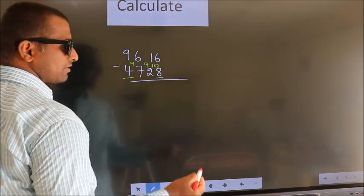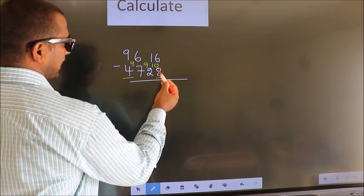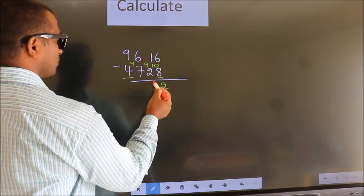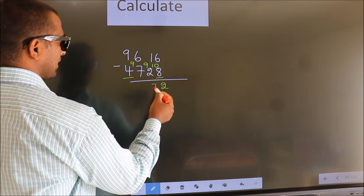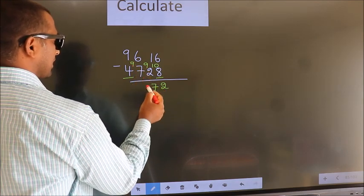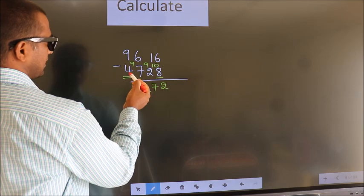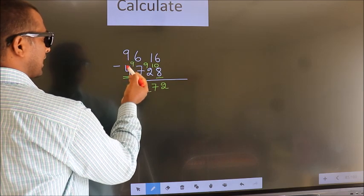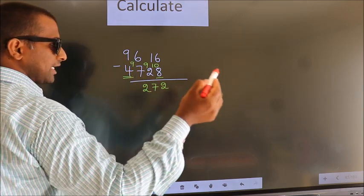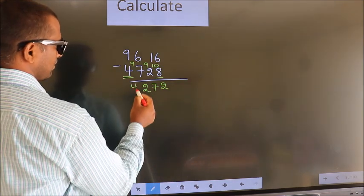Now we subtract 10 minus 8, that's 2. 9 minus 2 is 7. 9 minus 7 is 2. Now for the first digit we do 9 minus 4, we get 5. Decrease more by 1, we get 4.